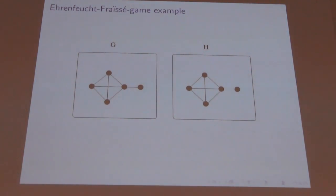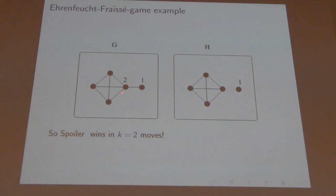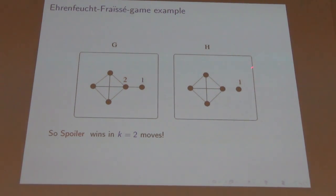Here's an example with two graphs G and H. If Spoiler is smart, he starts by labeling a vertex in H. Duplicator has to play on G, so maybe he plays here. Now Spoiler switches to G and labels vertex 2. Duplicator has to put 2 in H, but vertex 2 there is connected to 1 — and it's not possible to satisfy this. Spoiler has won in only two moves. Switching is very useful and can help you win the game.